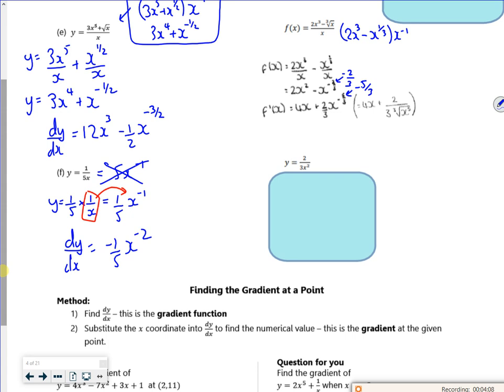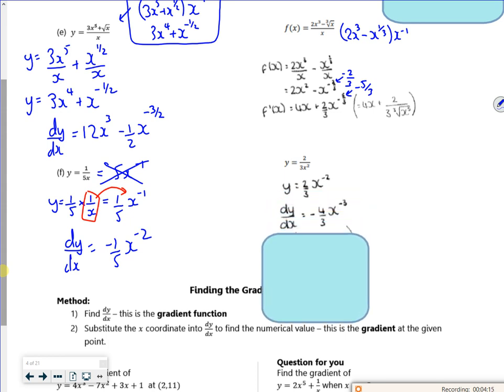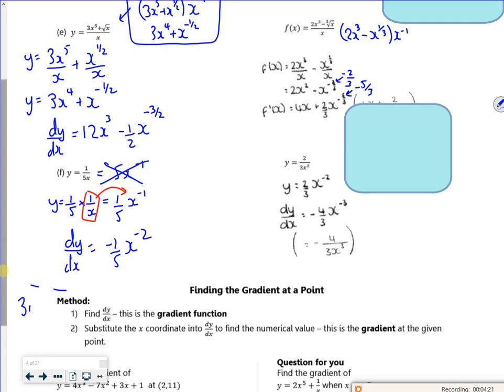So hopefully that should be minus 1 fifth x to the minus 2. Yep. Then bring the 2 down, so minus 2 thirds x to the minus 2. Then minus 4 thirds x to the minus 1. And I think the third vid is fine for this next bit, because I seem to have checked it. So hopefully that's okay. Right, bye-bye.